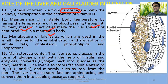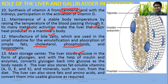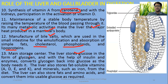The liver manufactures and synthesizes bile salts, used in the small intestine for emulsification and absorption of fats, along with cholesterol, phospholipids, and lipoproteins. It is also the main storage center — storing glucose in the form of glycogen, which is converted back into glucose when required with the help of insulin and enzymes. The liver also stores fat-soluble vitamins A, D, E, and K, as well as minerals including iron.